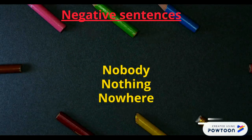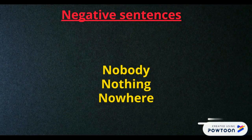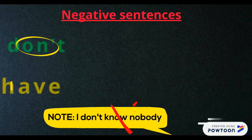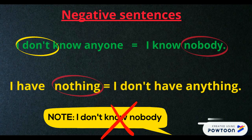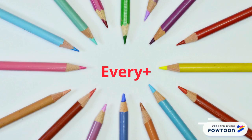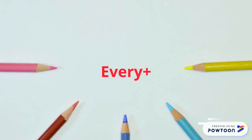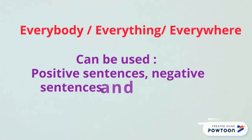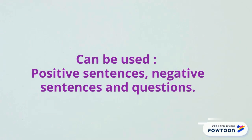We can also use nobody, nothing, and nowhere for negative sentences. Nobody has the same meaning as 'not anybody.' For example: 'I don't know anyone' or 'I know nobody.' 'I have nothing' or 'I don't have anything.' For everybody, everything, everywhere, these can be used in positive sentences, negative sentences, and questions.